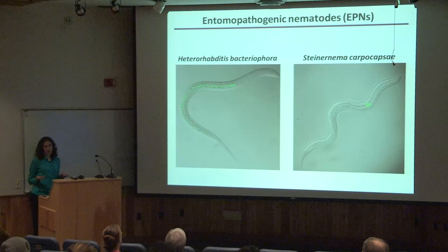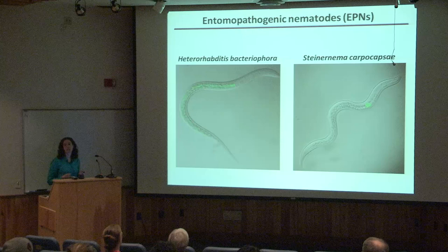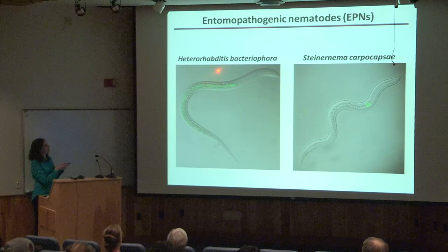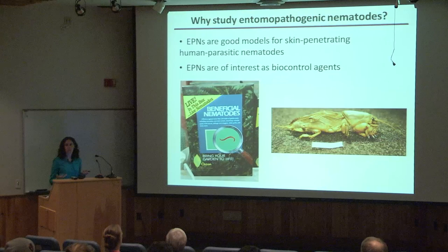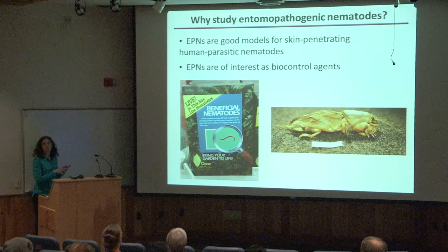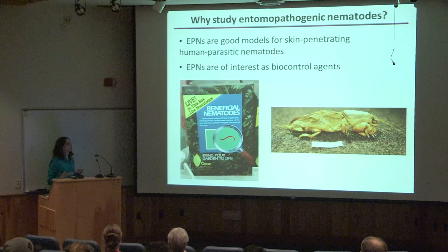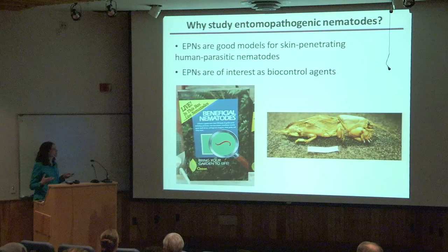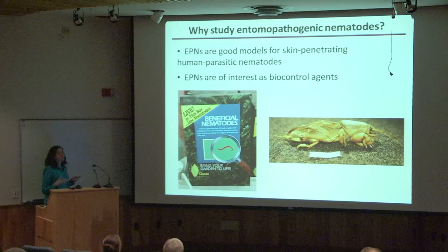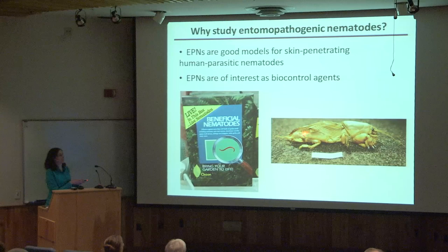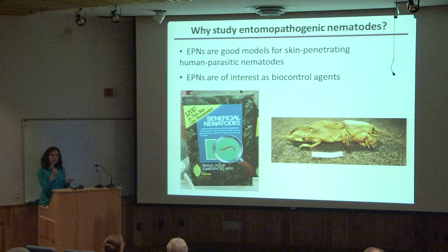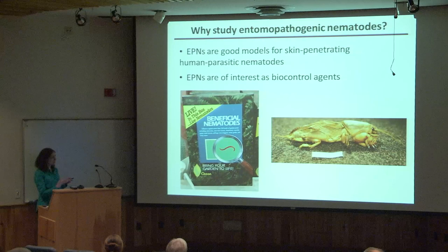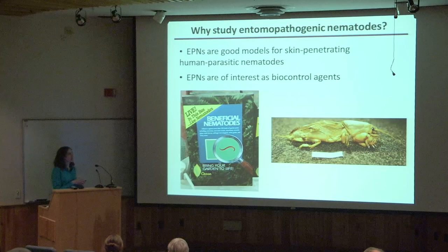The insect parasites we work with are called entomopathogenic nematodes, or EPNs — worms that infect and kill insects, primarily insect larvae. EPNs are really good models for skin-penetrating human parasitic nematodes because their host-seeking and host-invasion strategies are very similar. EPNs are also of interest as biocontrol agents — you can actually buy them commercially as 'beneficial nematodes' in the hardware store and spray them on your lawn to control pests. For example, a particular EPN called Steinernema scapterisci has been used very successfully for decades to control mole cricket infestations on golf courses.